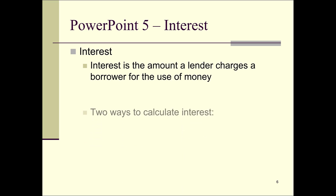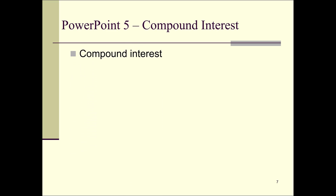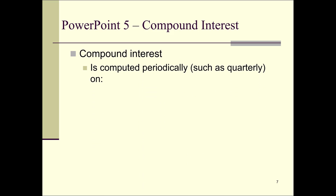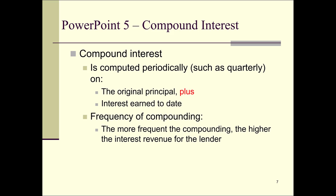There are two ways to calculate interest: compound interest and simple interest. We'll talk about compound interest first. Compound interest is computed periodically — periodically just means every certain time period, like once a month, once a year, or once a quarter. With compound interest, the interest is computed on the original principal — principal just means the loan — plus interest earned to date. The more frequent the compounding, the higher the interest revenue for the lender. Examples of compounding frequency include daily, quarterly, and monthly.